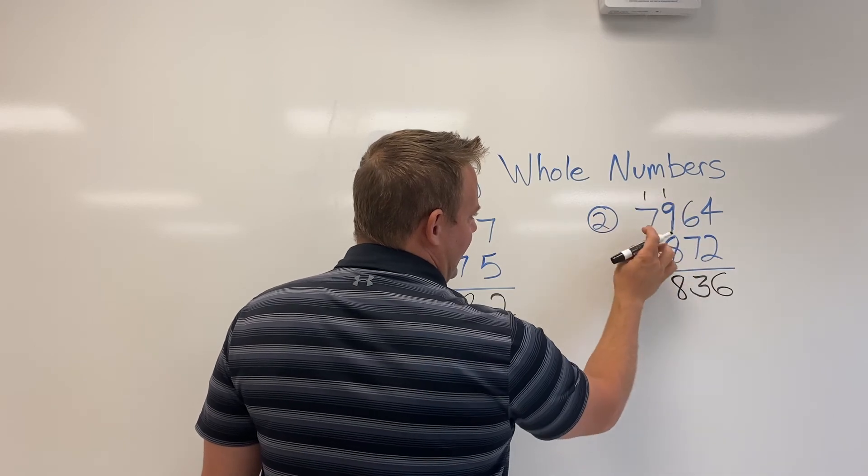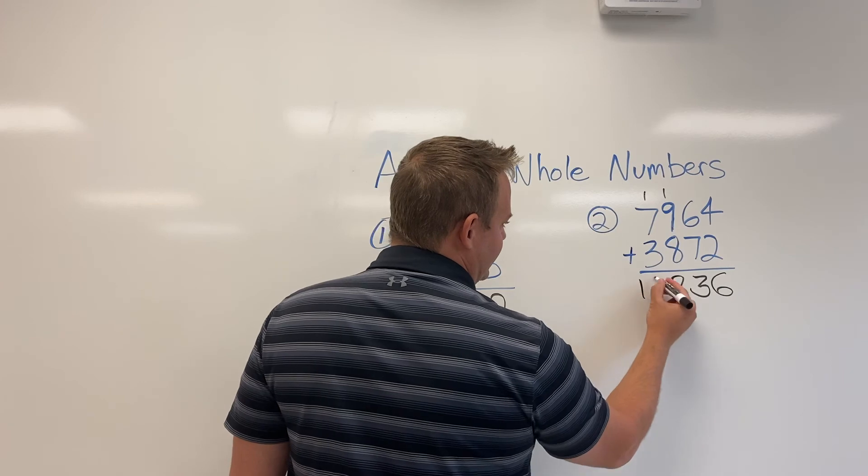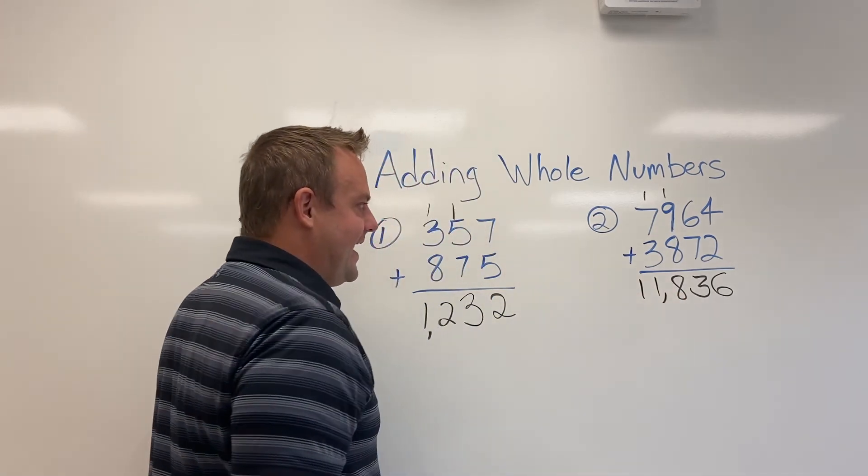And then I like doing 10 pairs. So like seven plus three is 10 plus one is 11. So 11,836.